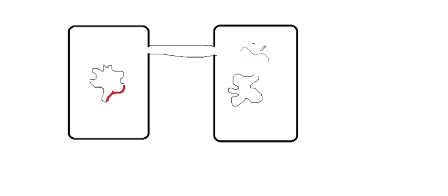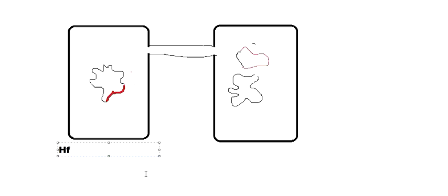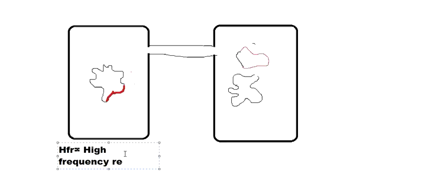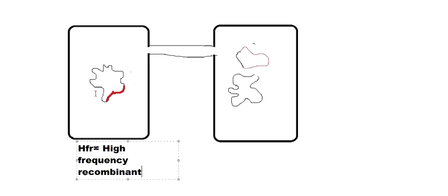Along with the plasmid, some portion of the donor bacteria's genetic material has also been transferred to the recipient bacteria. This is the difference — this is the special case of bacterial conjugation. When the plasmid has combined itself with the main genetic material of the bacteria, it has a special name which we denote as HFR — capital H, capital F, capital R. This type of bacteria is called HFR bacteria, which stands for High Frequency Recombinant.